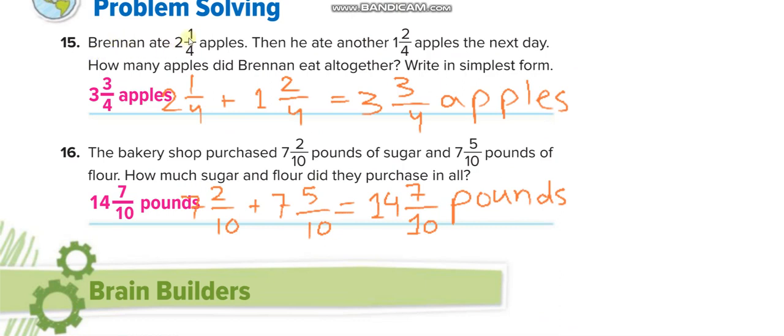Brennan ate 2 whole 1 over 4 apples then he ate another 1 whole 2 over 4 apples, so what is the total? You add both of them, 2 whole 1 over 4 plus 1 whole 2 over 4, 3 whole 3 over 4.